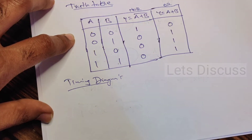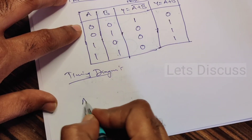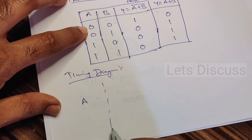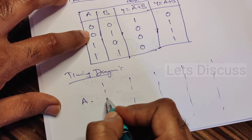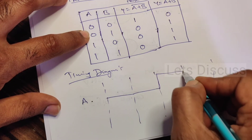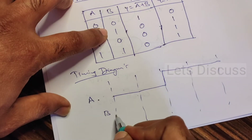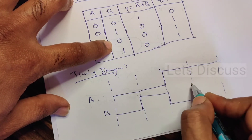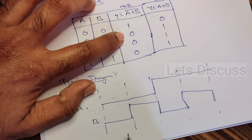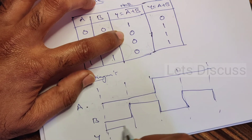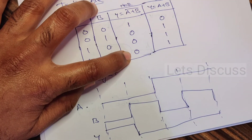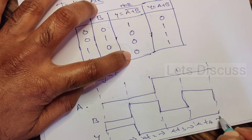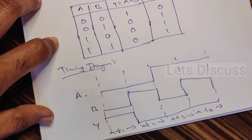Let's check with the timing diagram of NOR gate. We have four timing cycles. Initially A is zero, then one, one — and B is zero, one, zero, one. The output is high in the first timing cycle and low for all the remaining three conditions. This is T1, T2, T3, and T4 — the timing diagram of NOR gate.